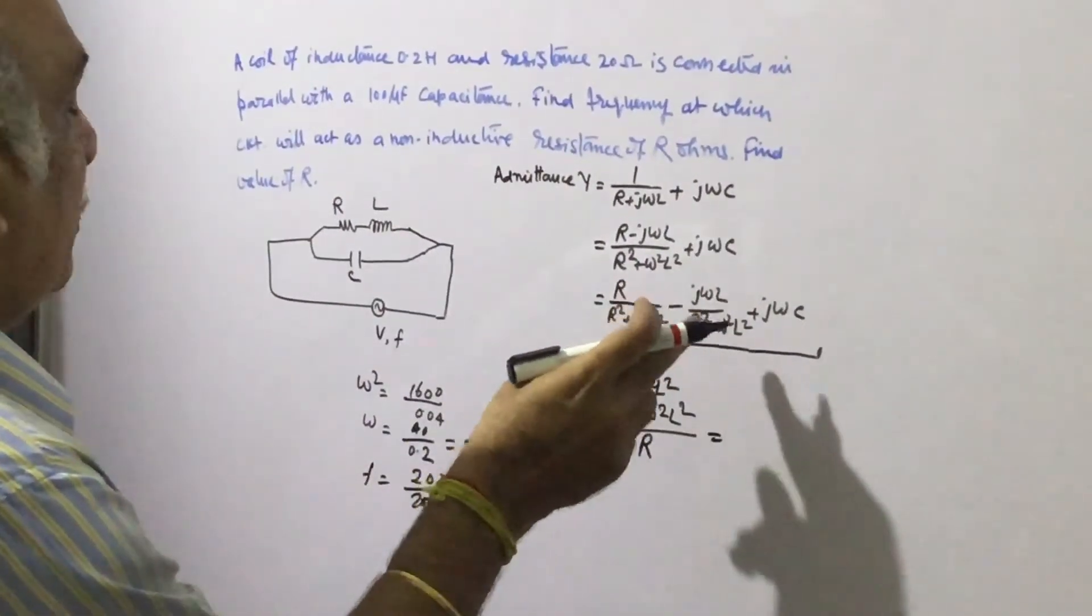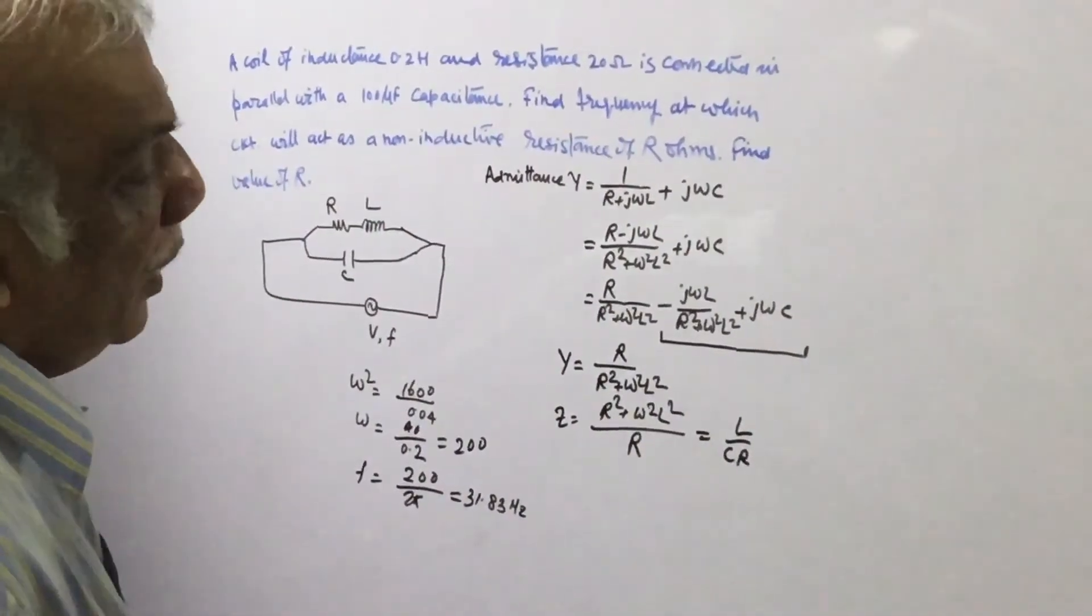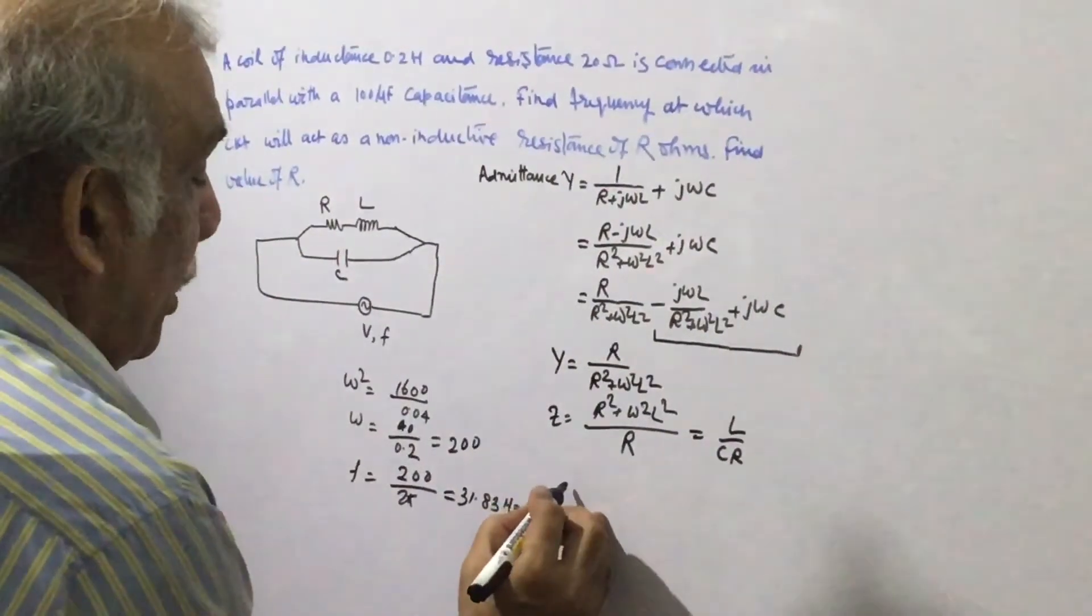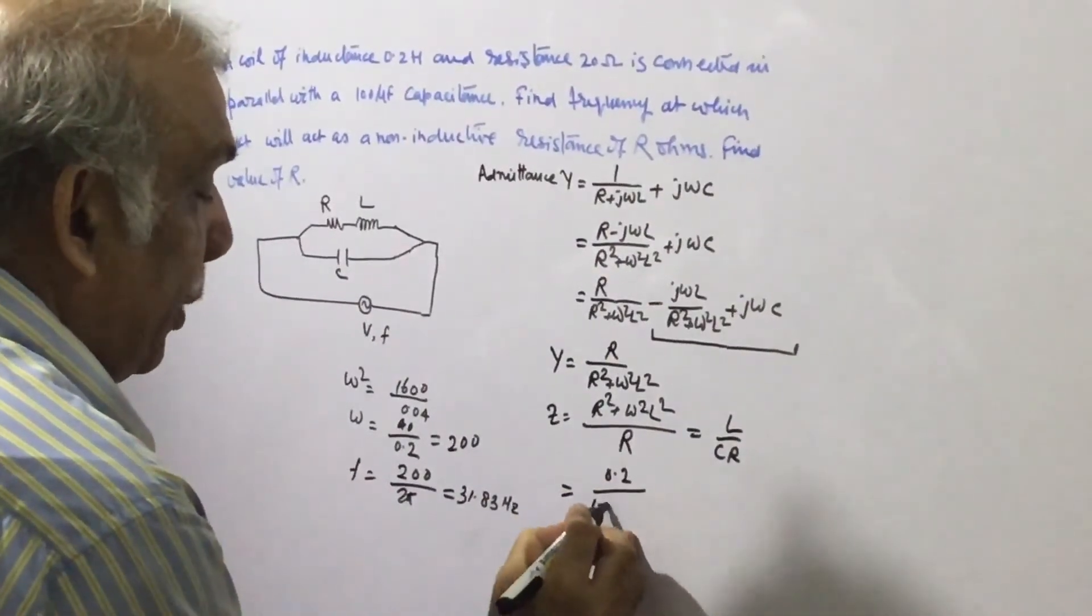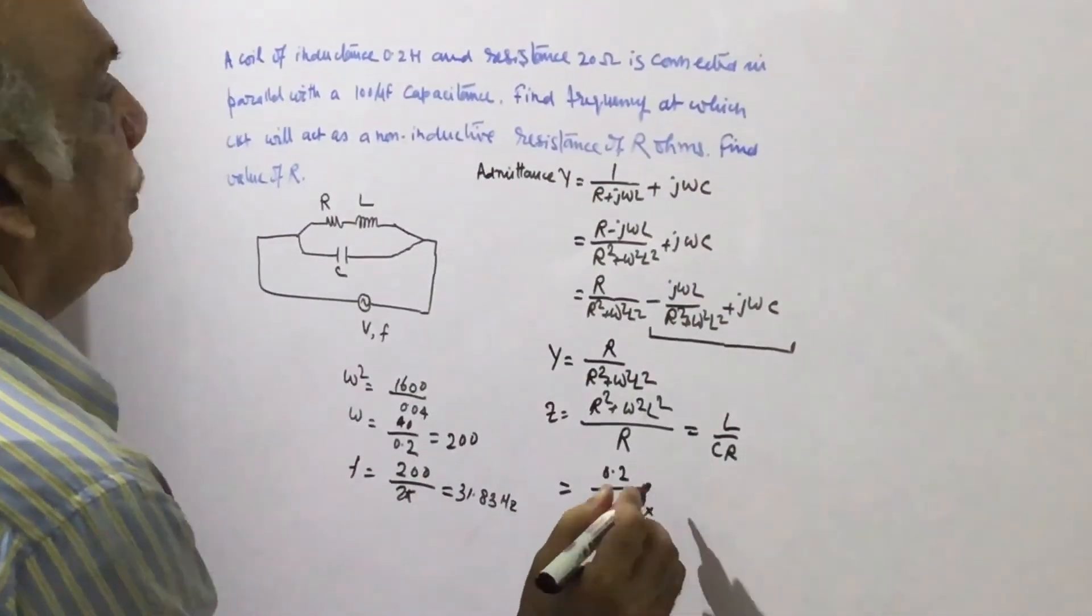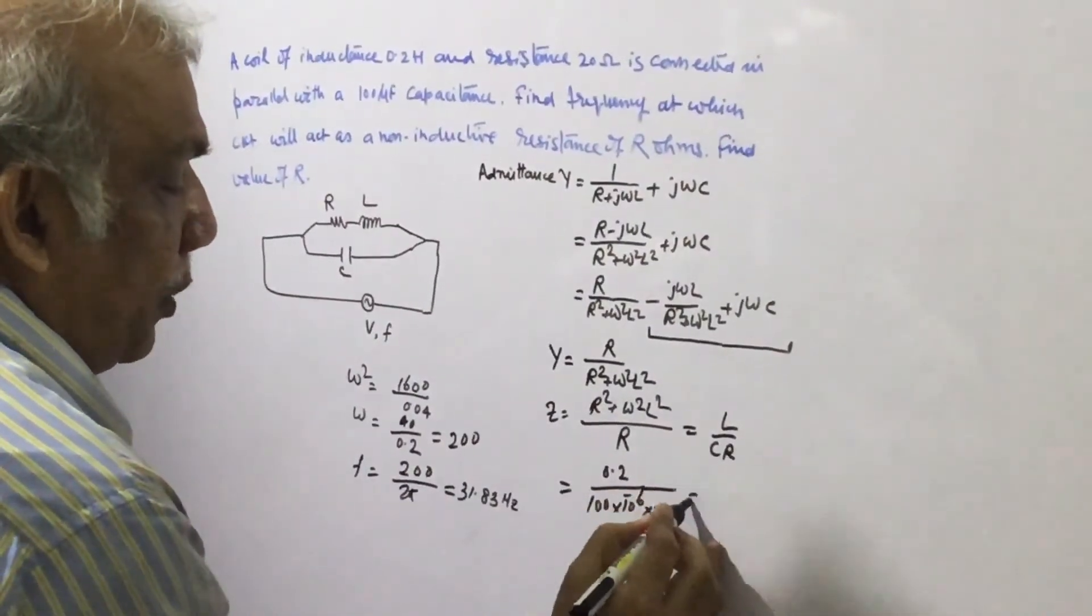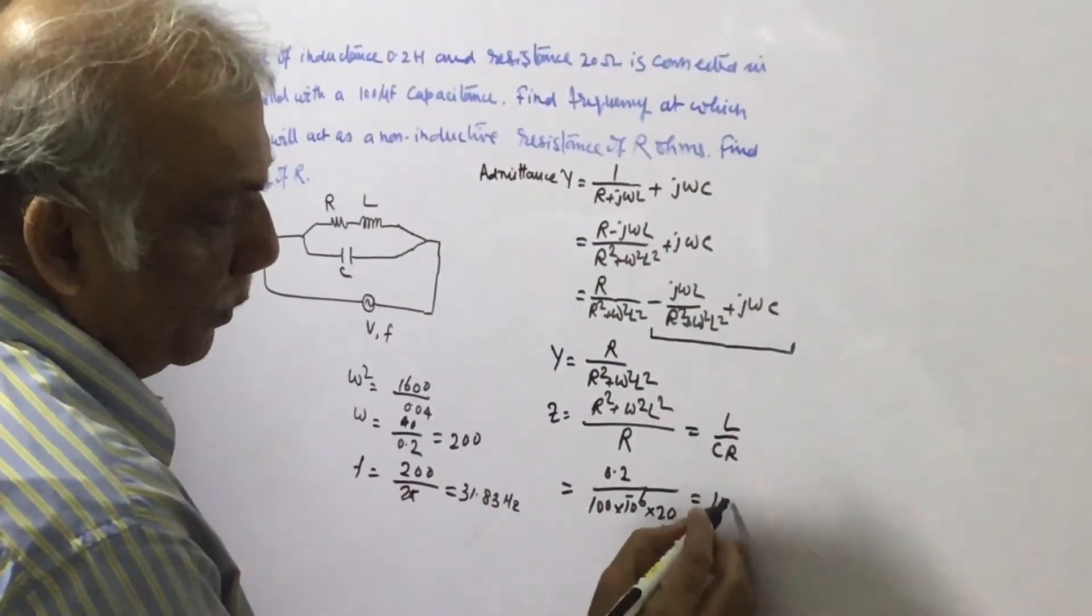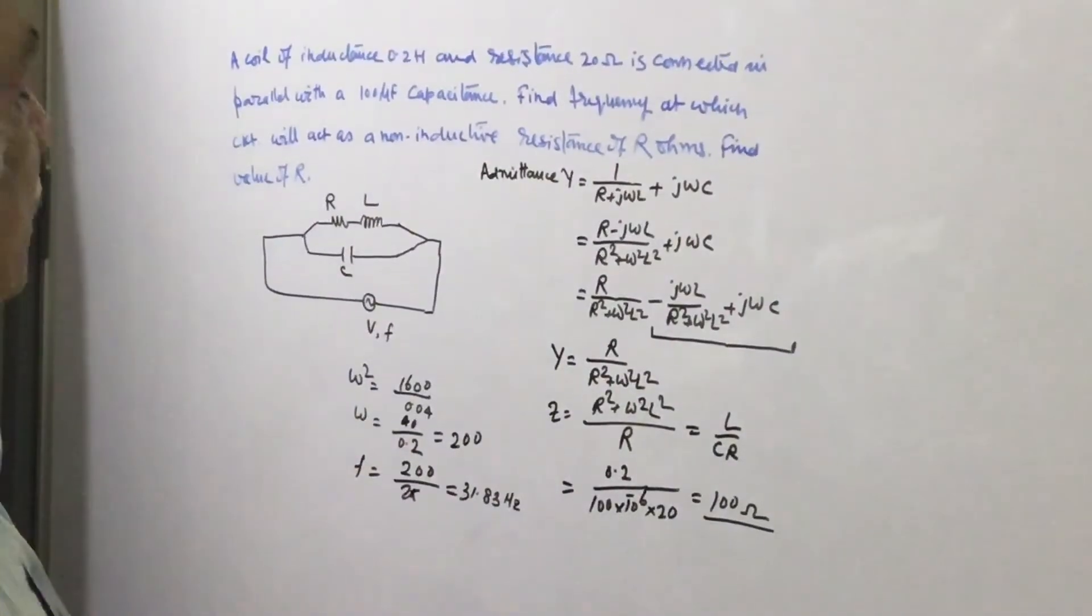So this is L upon C. The resistance component at resonance frequency: L is 0.2, C is 100 microfarad, and R is 20 ohms. This becomes 100 ohms. So dear friends at resonance frequency the circuit will offer resistance of 100 ohms and resonance frequency is 31.83 Hertz.